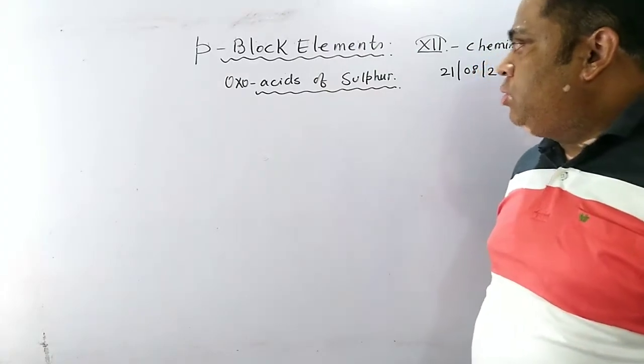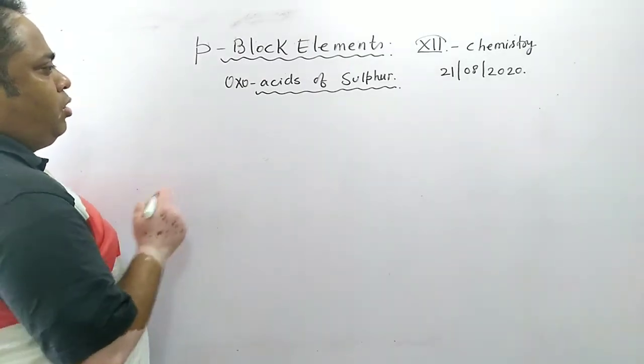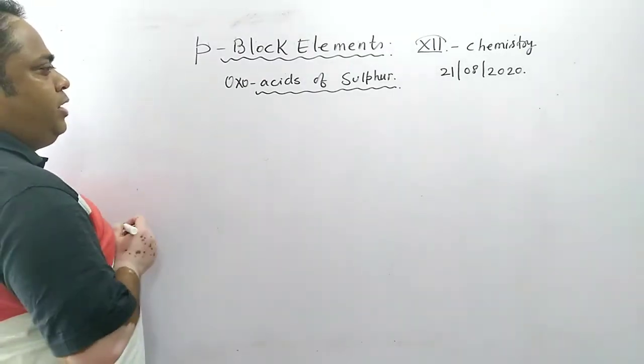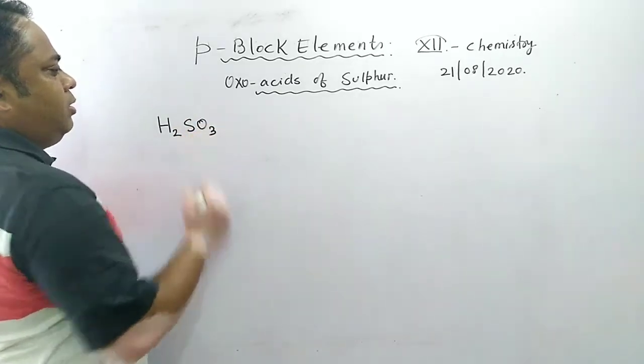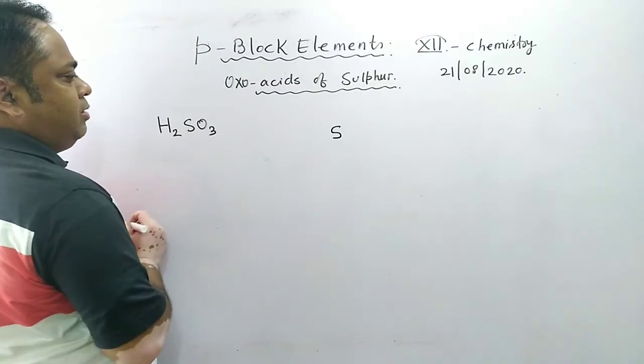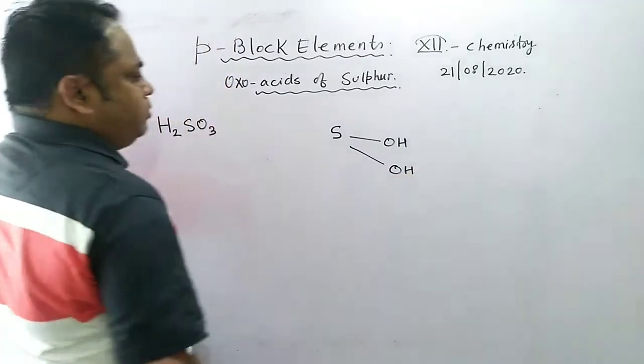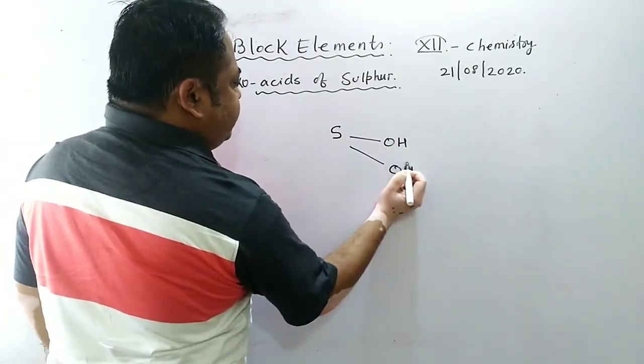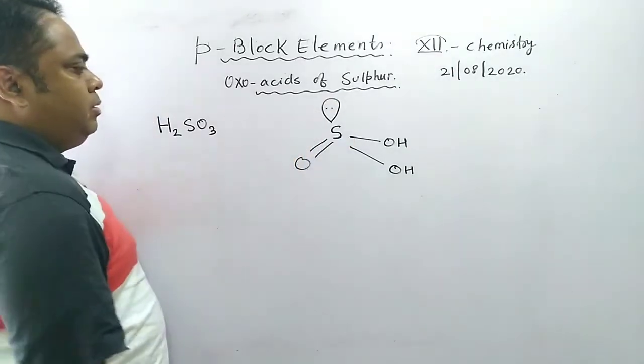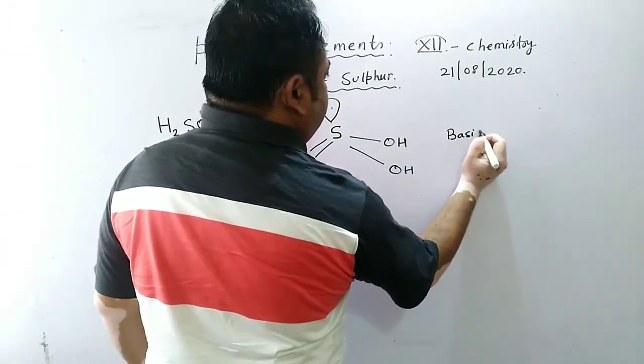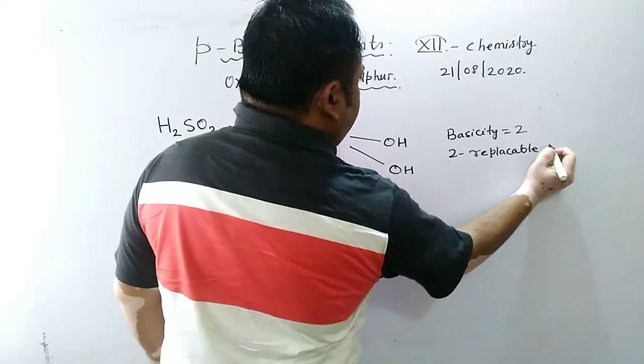Today we will be seeing the oxoacids of sulfur and their structure. Their preparation is not there, so we will have to always see the structure. The commonly known sulfuric acid to all of us is sulfurous acid, H2SO3. Now what is its structure? Since it has two OH groups, its basicity is 2. So it has one double bond oxygen and one lone pair will be there.